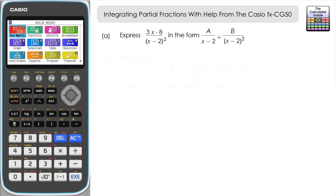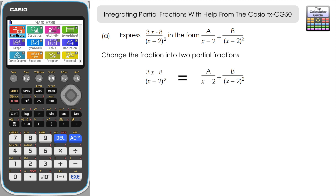First we're going to change the expression into partial fraction form. We set (3x − 8) over (x − 2)² equal to the partial fraction form. The first step is to multiply throughout by the highest order on the denominator, which is (x − 2)². Multiplying everything by (x − 2)² will give us one working line to help us find A and B.